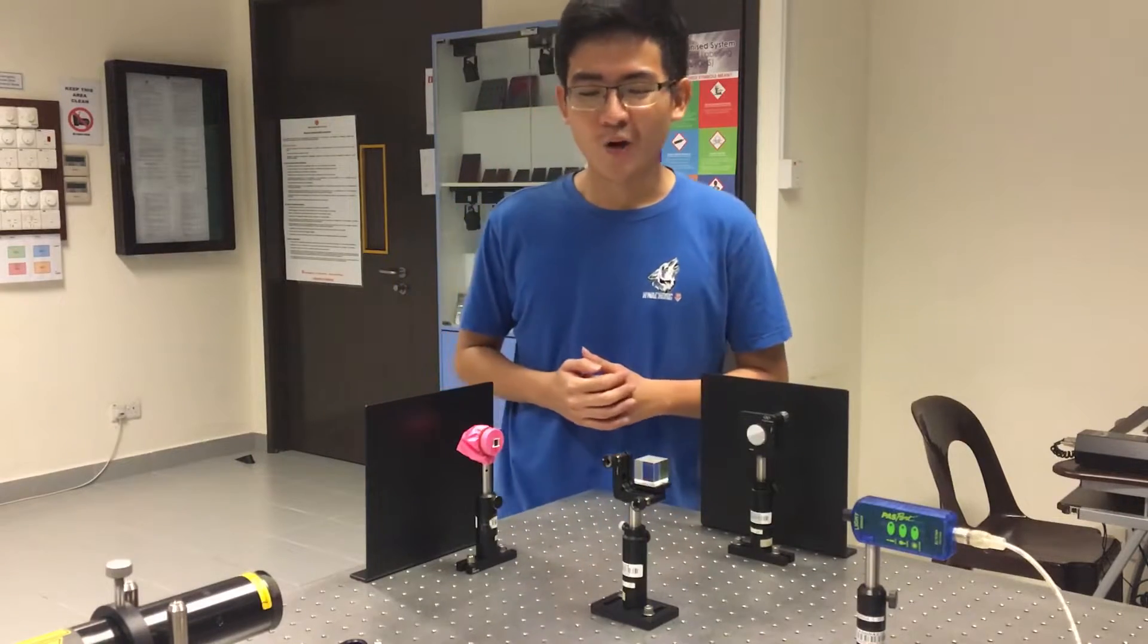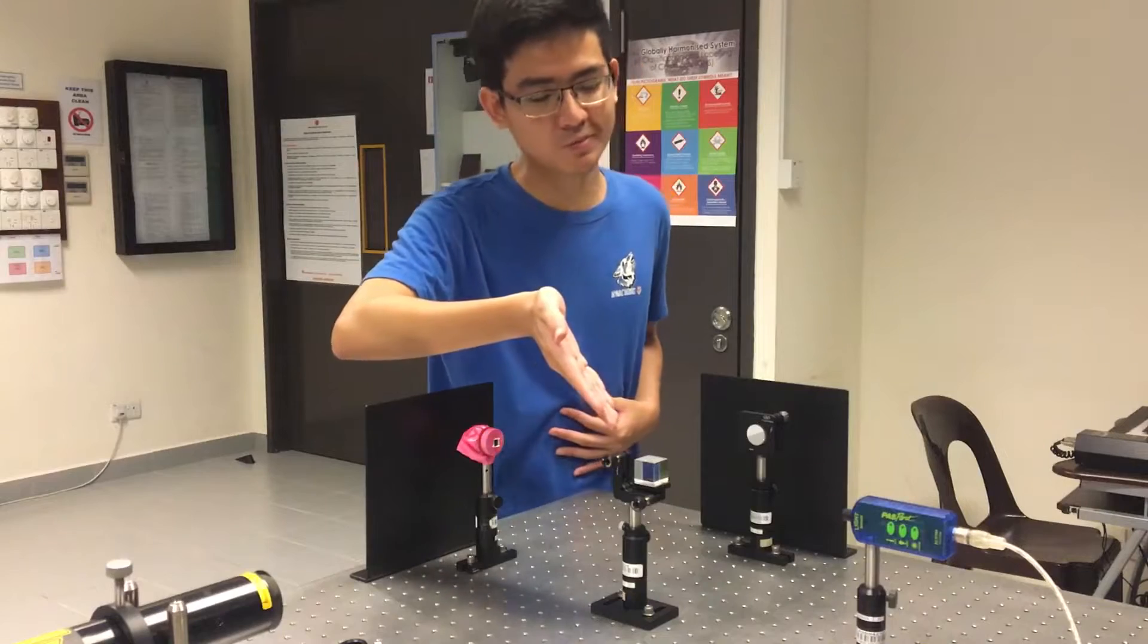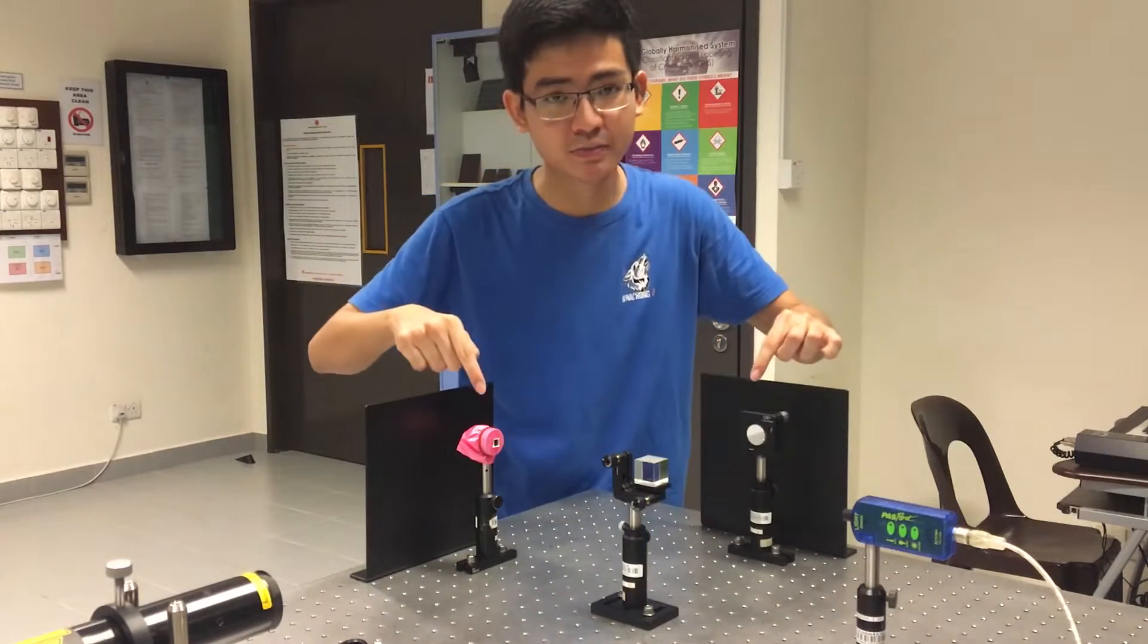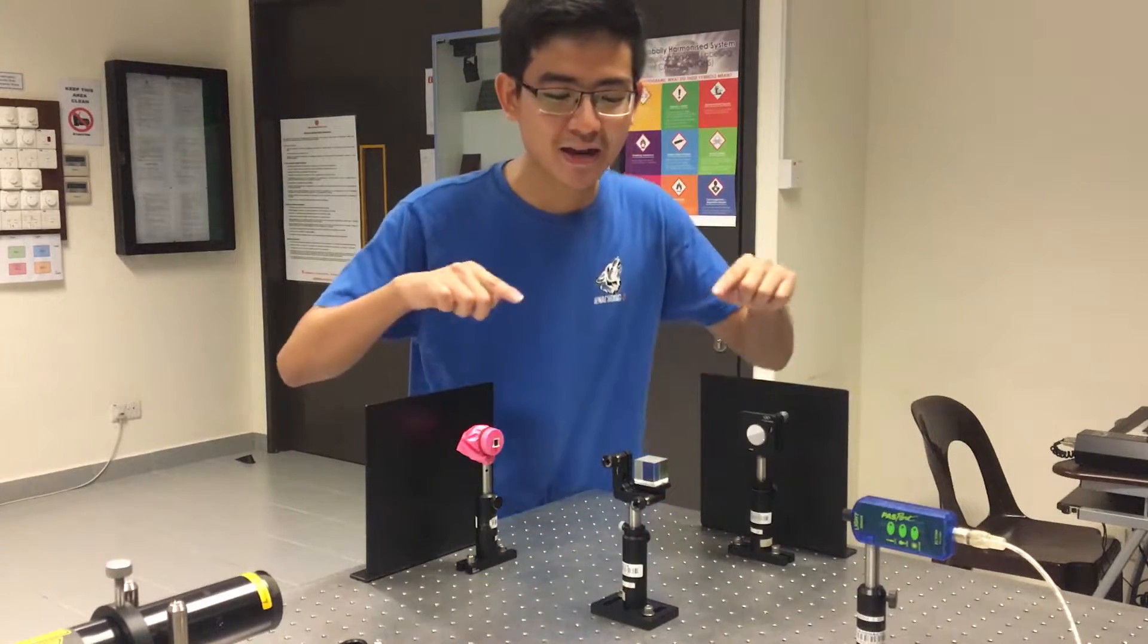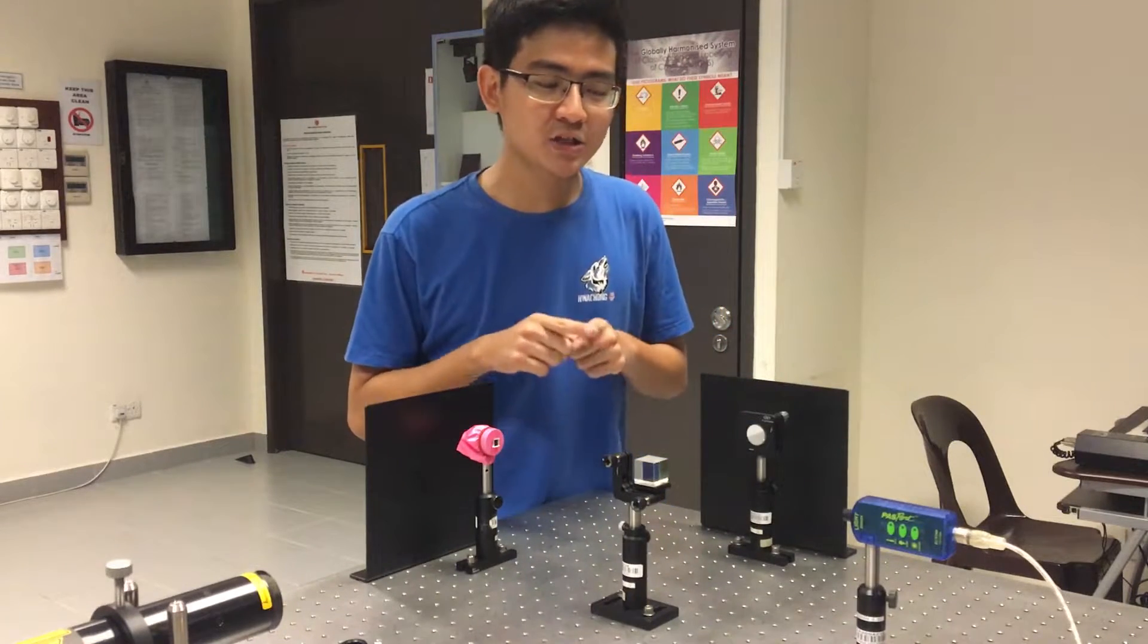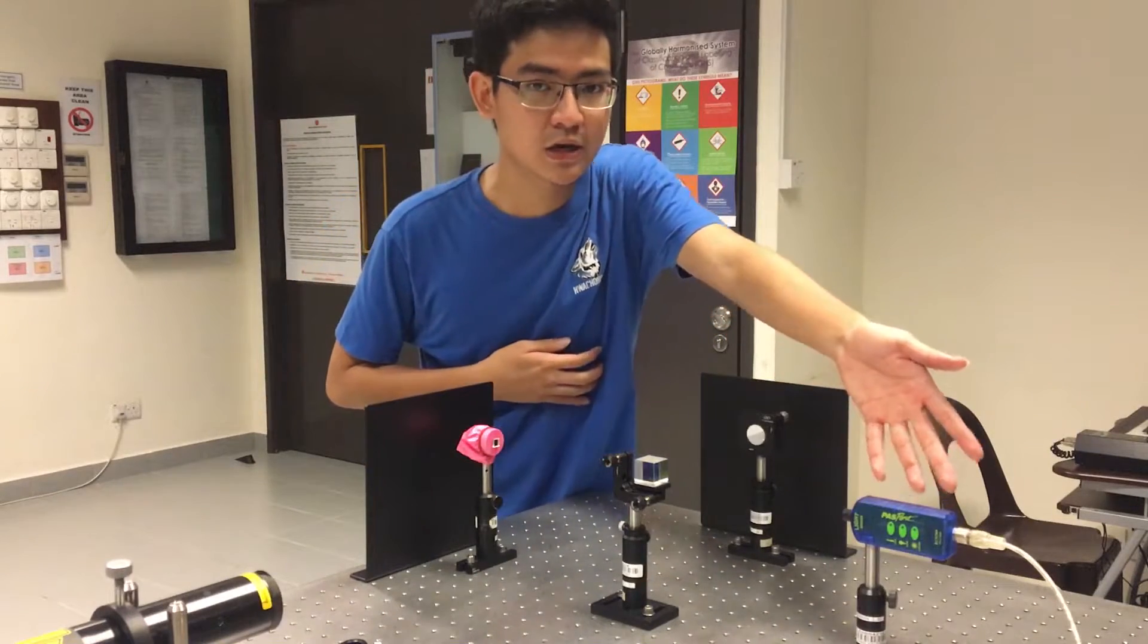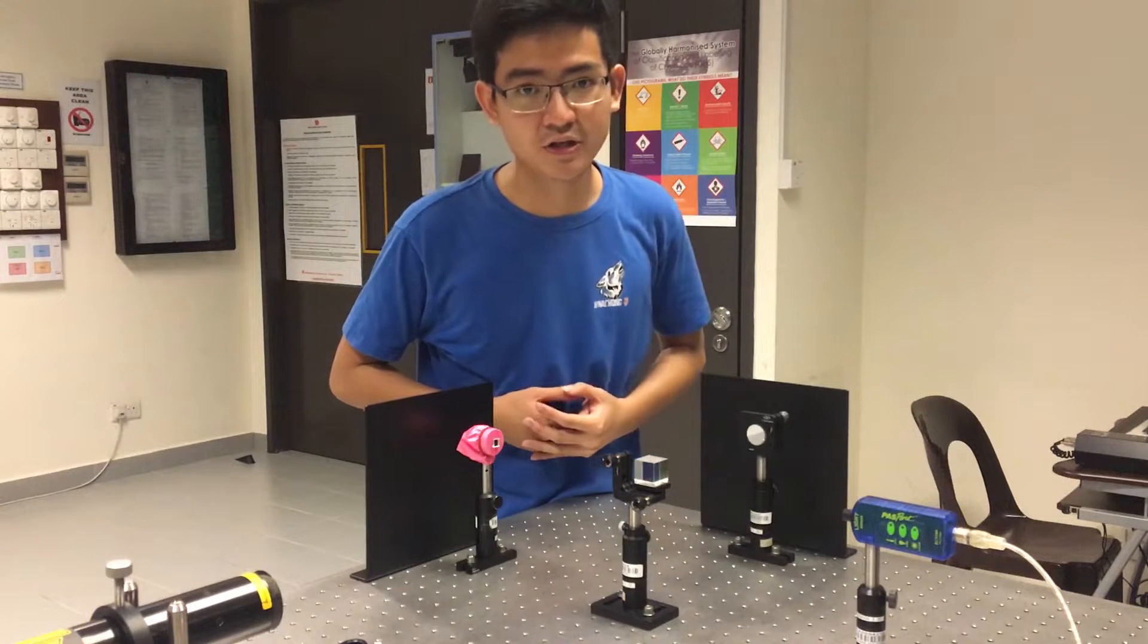So how does it work? Well, the laser generator will generate a laser beam toward this beam splitter. The beam will be split into two perpendicular beams heading toward the mirrors. Once reflected by the mirrors, they will head back to the beam splitter. At this beam splitter, they will be combined to form a final laser beam heading toward the intensity logger. And in this final beam, we can view the interference pattern.